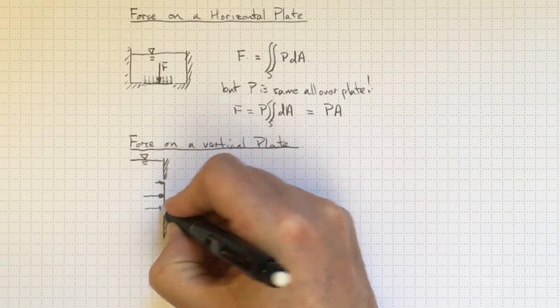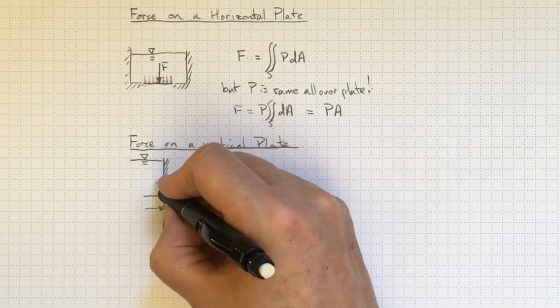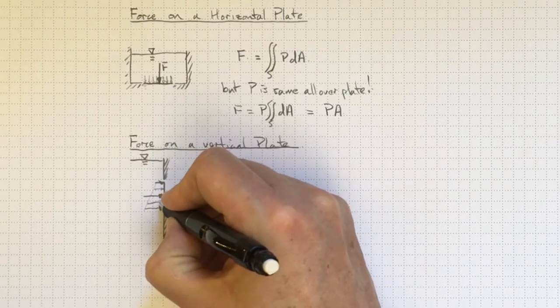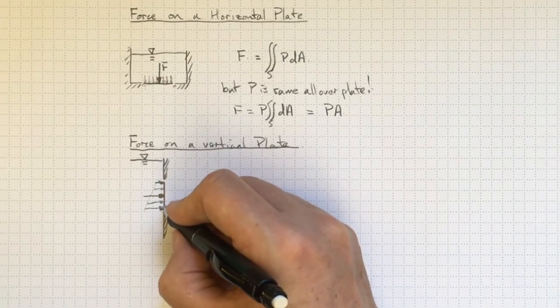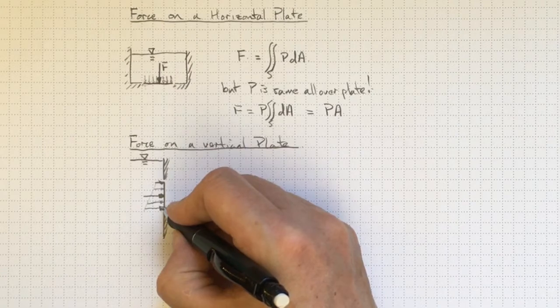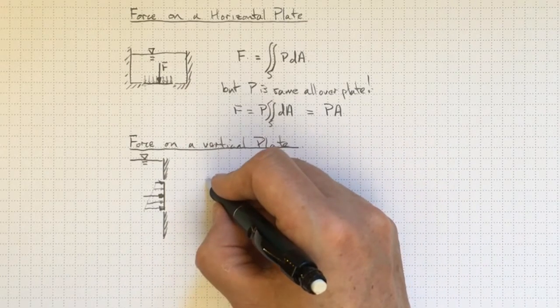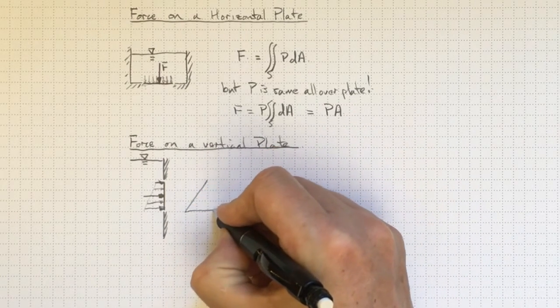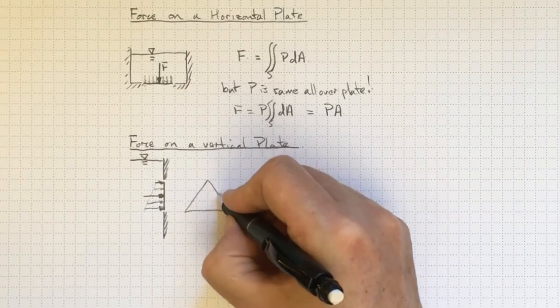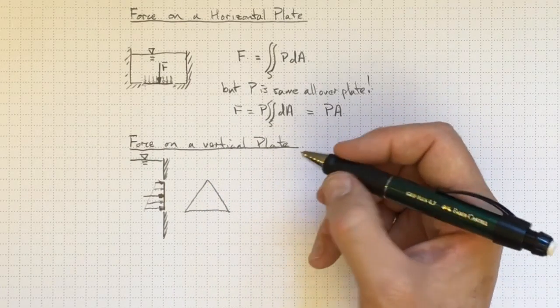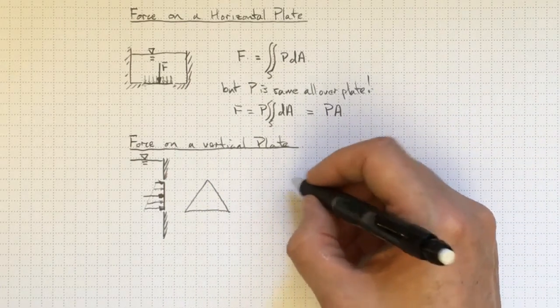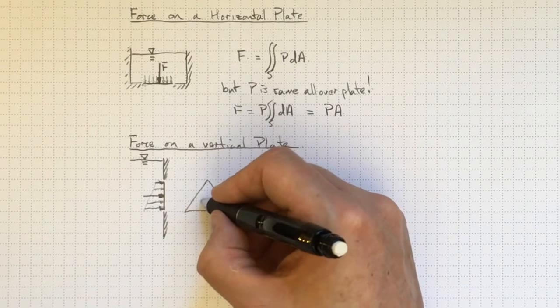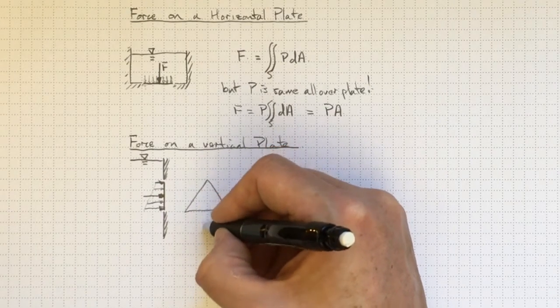And it's actually linearly increasing. So the pressure force is concentrated more towards the bottom of this plate. And let's suppose at the same time that this plate isn't actually a rectangle. It's got maybe a triangular shape or maybe some arbitrary shape. So that its width varies depending on the position.